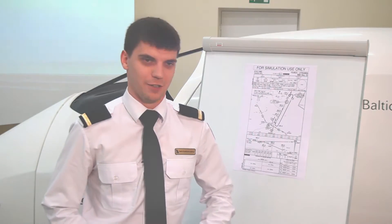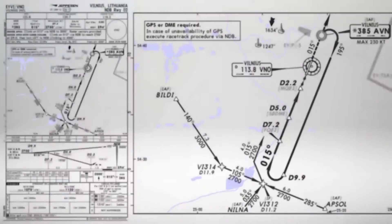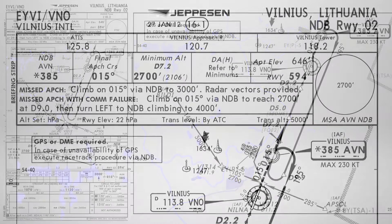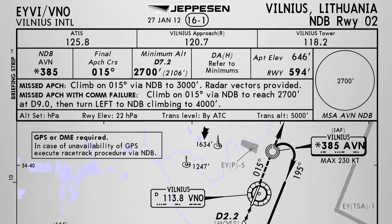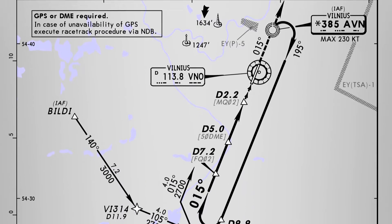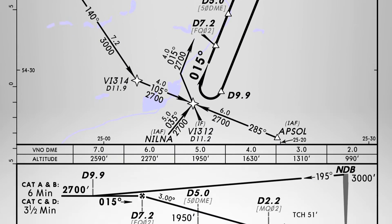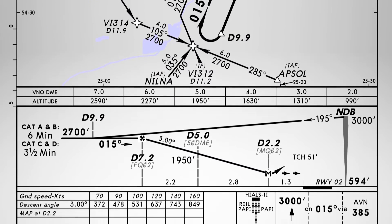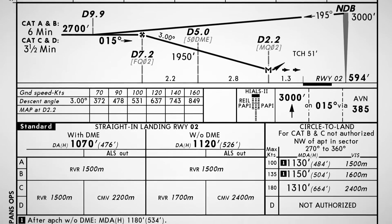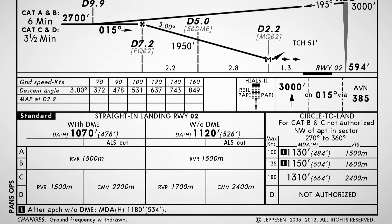Let's look at the chart first. A non-directional beacon or NDB approach is a non-precision approach where the NDB is used as the primary navigational aid. The approach minimums for NDB are usually higher than any other instrument approach because NDB signals are less precise and are subject to several types of interference.